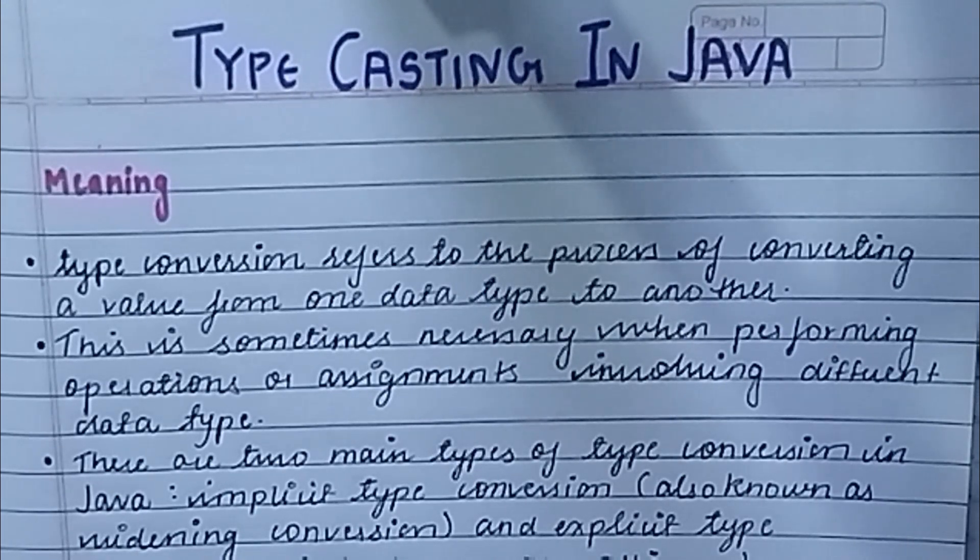There are two types of typecasting: implicit and explicit. We will read them properly so we can understand the difference between both.